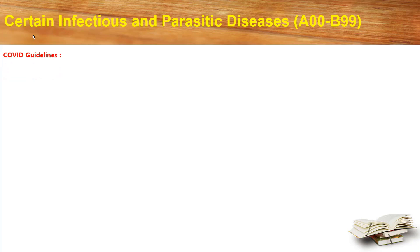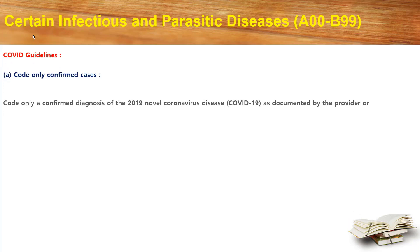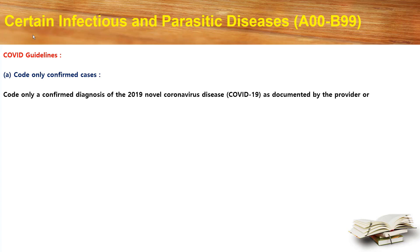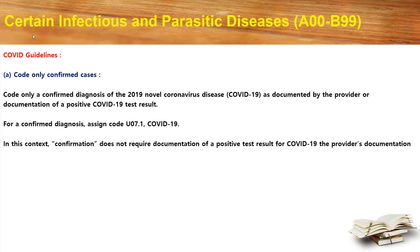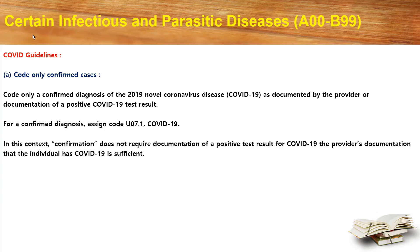Let's move into the COVID guidelines. Code only confirmed cases — code only a confirmed diagnosis of 2019 novel coronavirus disease, that is COVID-19, as documented by the provider or documentation of a positive COVID-19 test result. For a confirmed diagnosis, assign the code U07.1, that is COVID-19. In this context, confirmation does not require documentation of a positive test result; the provider's documentation that the individual has COVID-19 is sufficient.